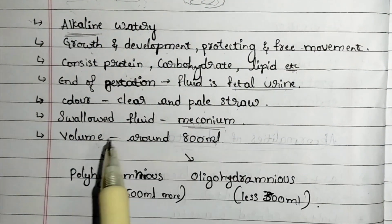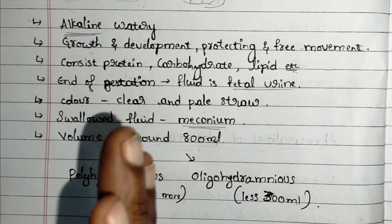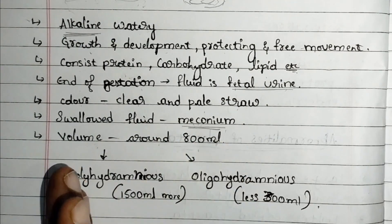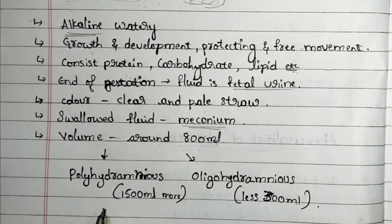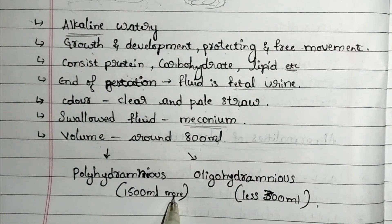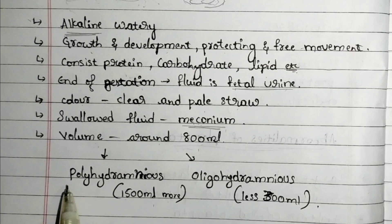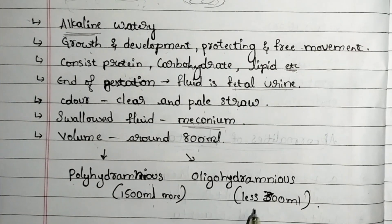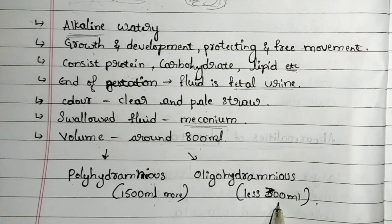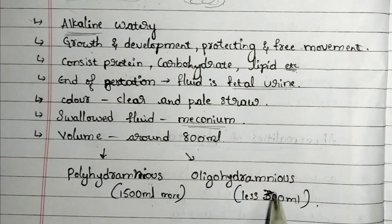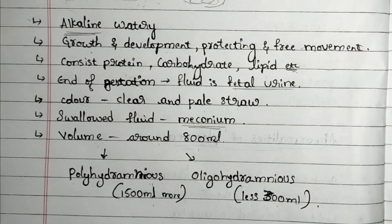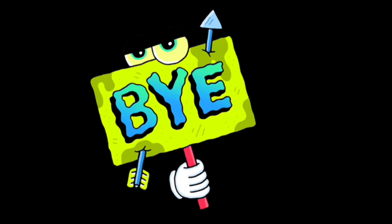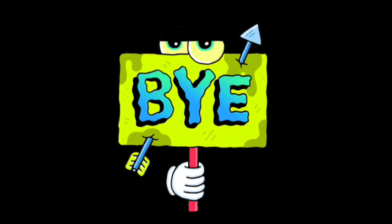The normal volume of amniotic fluid is around 800 ml. If the volume is more than 1500 ml, that condition is known as polyhydramnios. If the volume is less than 300 ml, that condition is known as oligohydramnios. Questions will be provided after completing the whole chapter. That's it for today.